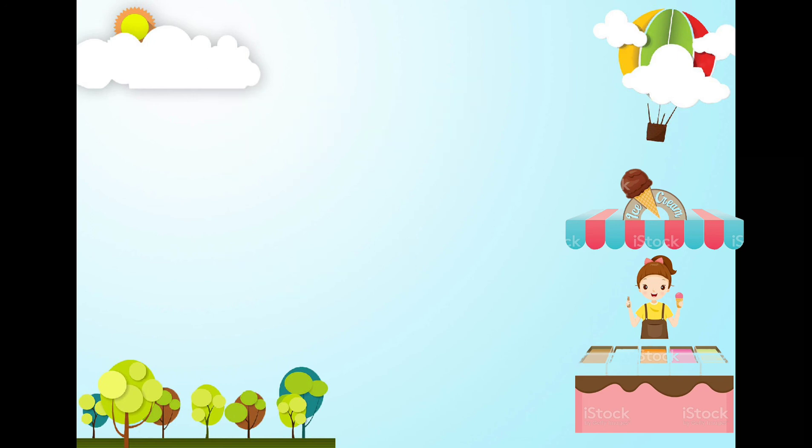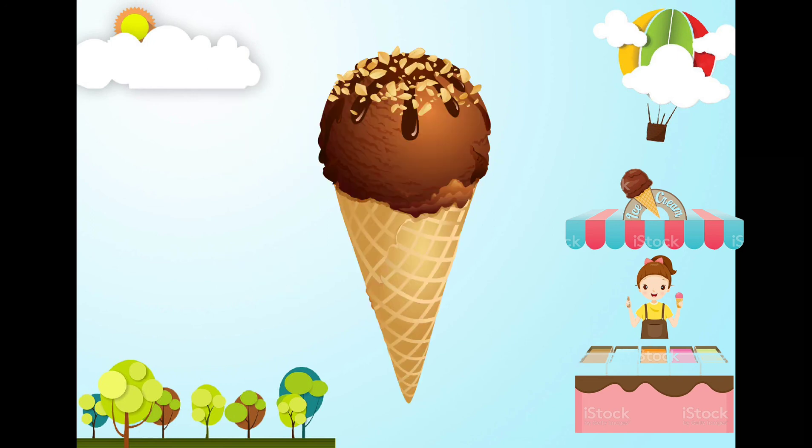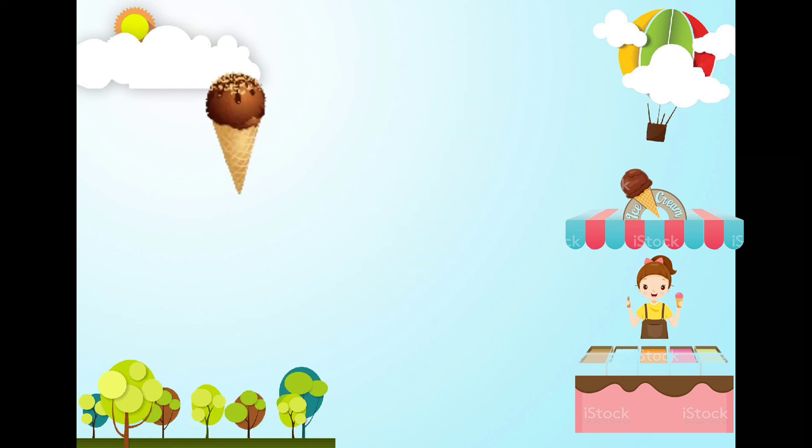I have 1 ice cream to give away. And, I will give it to Christine. Now, let's do the subtraction. 1 minus 1 equals 0. Yay! No more ice creams left.